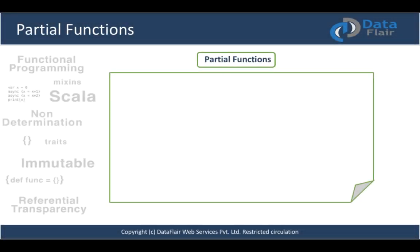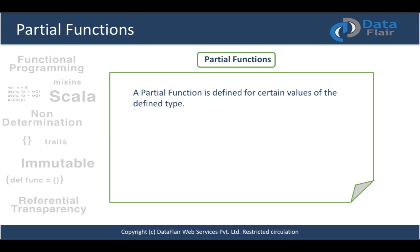Now that we understand closures, function literals, and higher-order functions, it's time to learn about partial functions. A normal function is defined for any set of values — for example, increment-by-one works for any integer. A partial function is different: it is defined only for certain values of the defined type.